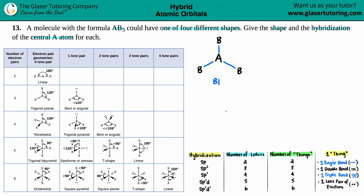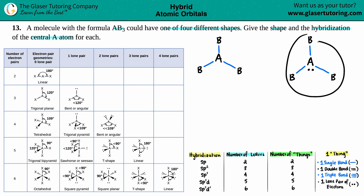For the next one, we still have A in the middle with B's around it — that doesn't change — and we put single bonds in. But now we're adding lone pairs, so maybe I now have one lone pair on the central atom. This is now completely different from the first one. This would be an example of NH3.